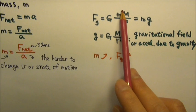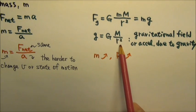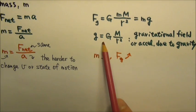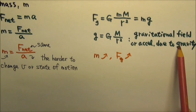If we cancel the little m, we get this little g, which equals big G times big M over r squared. The little g is called the gravitational field, or the acceleration due to gravity.